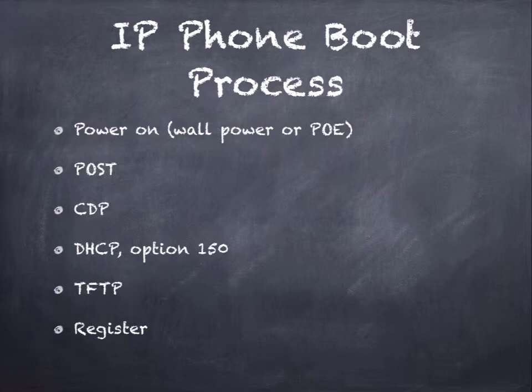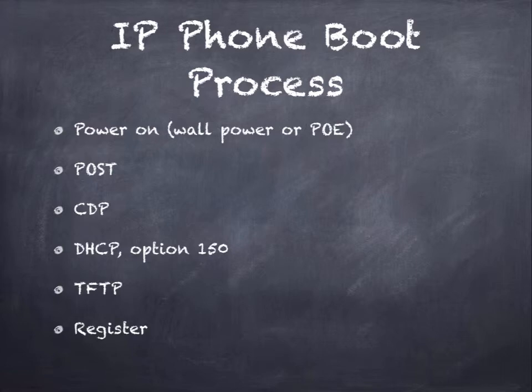If a configuration file is found, the phone downloads it. Contained in that configuration is the IP address of the Call Manager that the phone is supposed to register to. The phone uses that information to contact the Call Manager and attempt to register, providing its MAC address as proof of identity. If the Call Manager has been programmed with that MAC address, it returns information like the extension number, names to display on the phone, and all relevant information, and the phone is now ready to go.